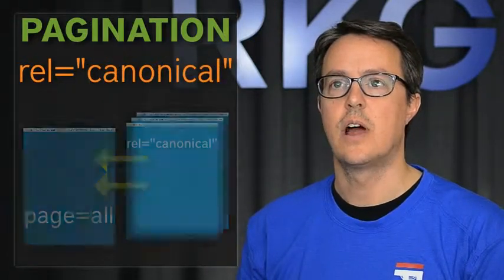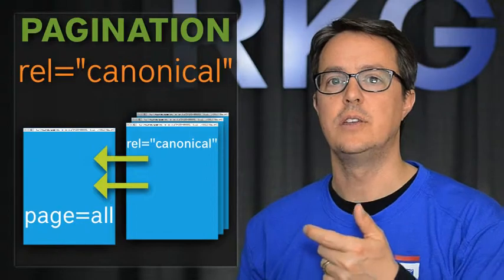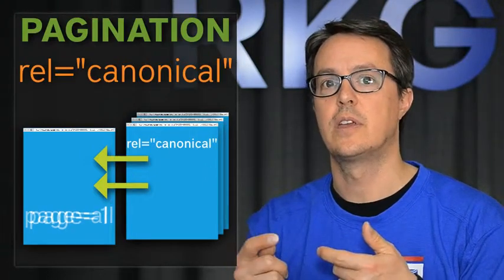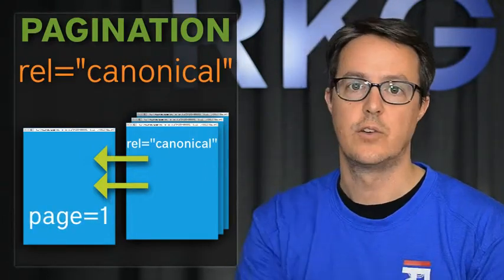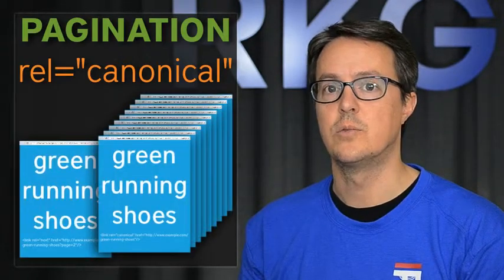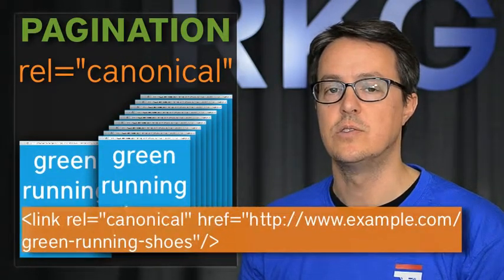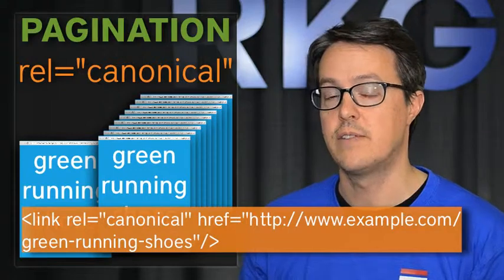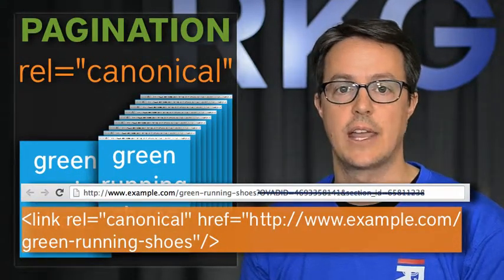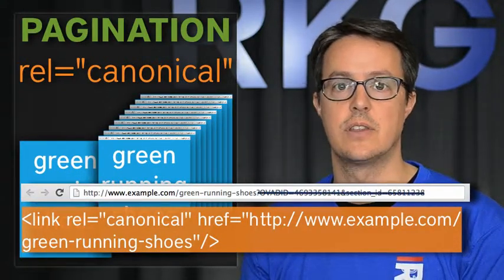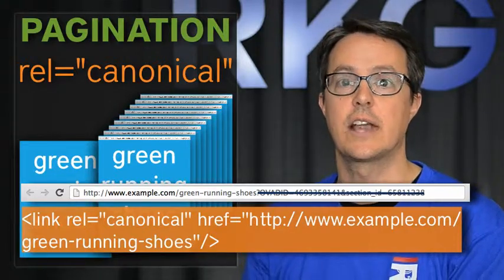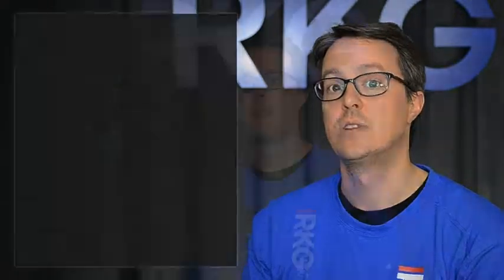The third is rel-canonical being used to reference a view-all page or to reference a page-one version of a page. For rel-canonical it should really just be used to reference the canonical version of that URL — taking out session IDs and tracking parameters and things that you don't want crawled and indexed because they actually don't change the content of the page.